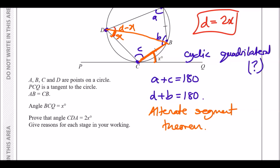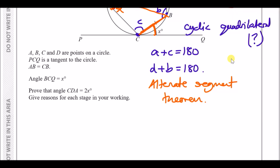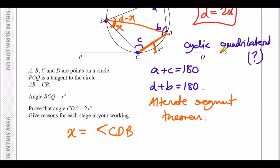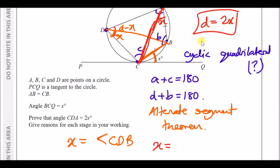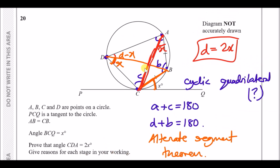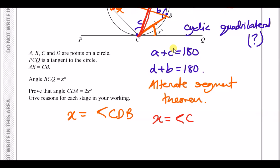We can write: angle x equals angle CDB, by the alternate segment theorem. Similarly, the other side of the chord gives another equal angle, so angle x also equals angle CAB. This is the alternate segment theorem applied to give us two angles both equal to x.